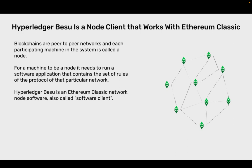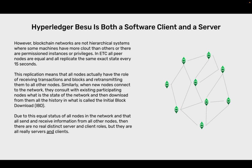Hyperledger Bezu is a node client that works with Ethereum Classic. Blockchains are peer-to-peer networks and each participating machine in the system is called a node. For a machine to be a node it needs to run a software application that contains the set of rules of the protocol of that particular network. Hyperledger Bezu is an Ethereum Classic network node software, also called a software client. It is both a software client and a server. However, blockchain networks are not hierarchical systems where some machines have more clout than others or there are permission instances or privileges. In ETC all peer nodes are equal and all replicate the same exact state every 15 seconds. This replication means that all nodes have the role of receiving transactions and blocks and retransmitting them to all other nodes.